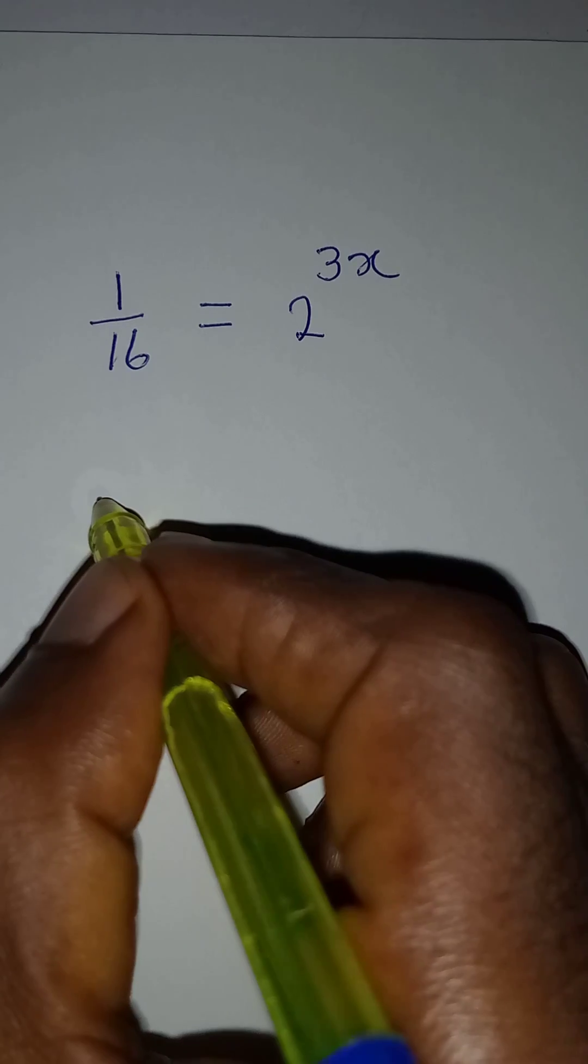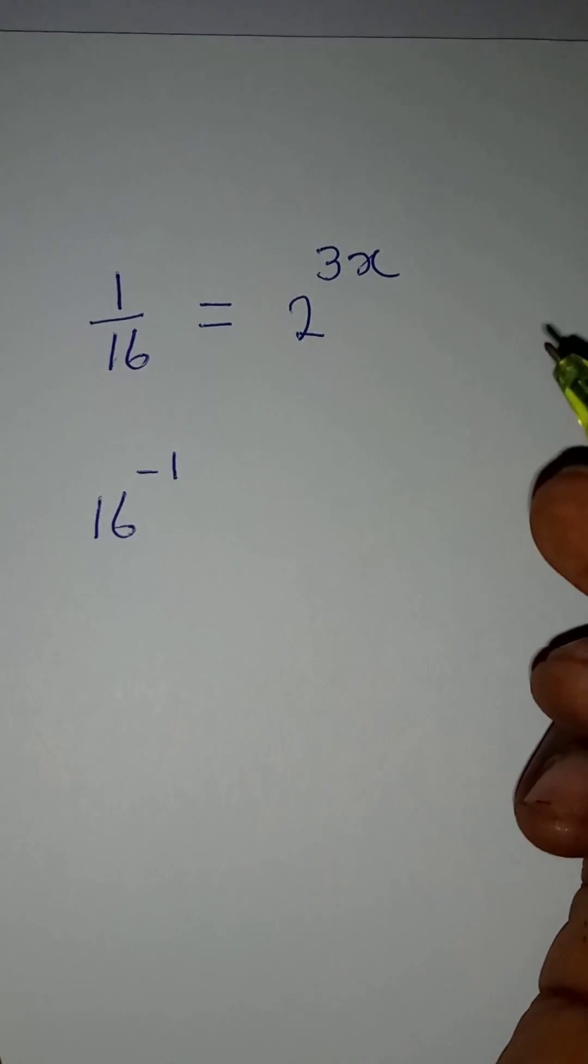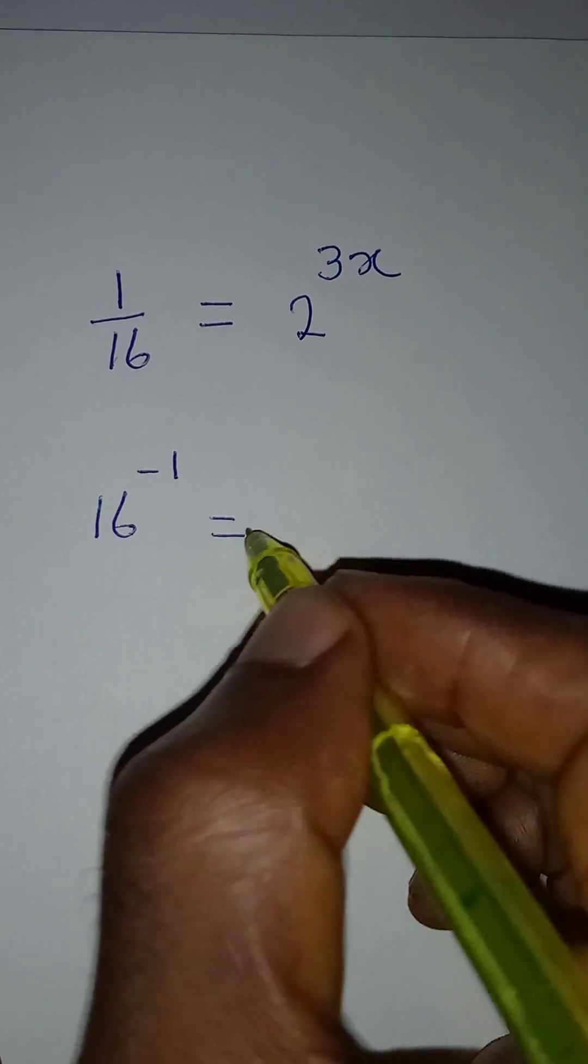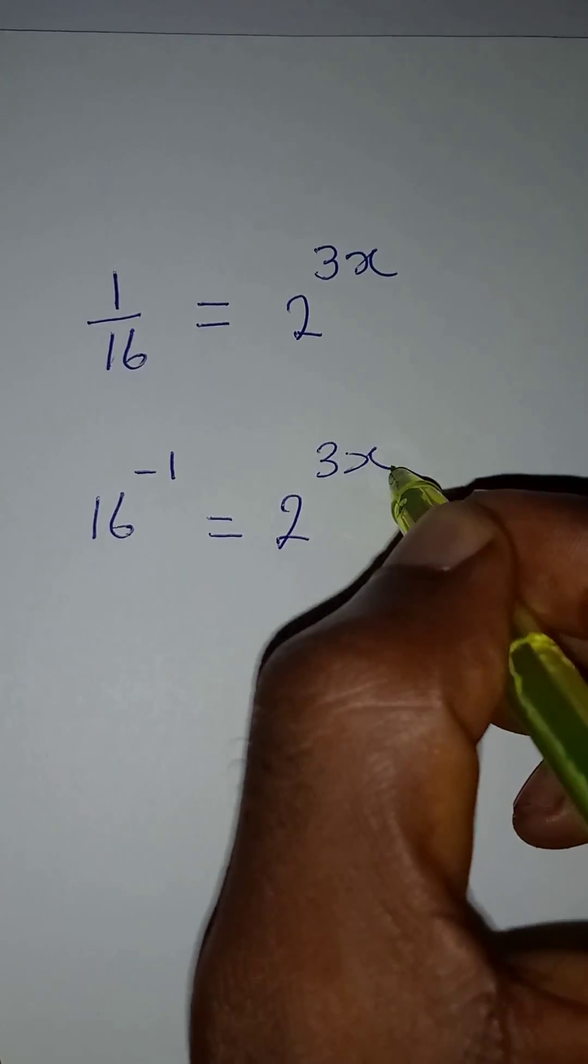1 over 16 is the same thing as 16 to the power of negative 1, according to the law of indices. And this will be the same thing. This will be equal to 2 to the power of 3x.